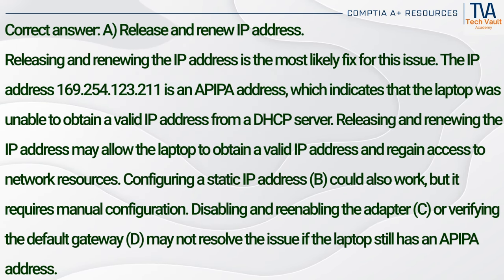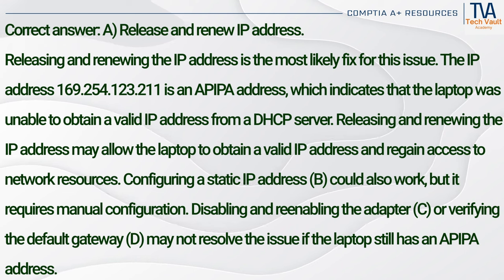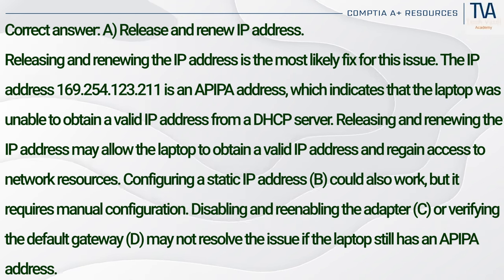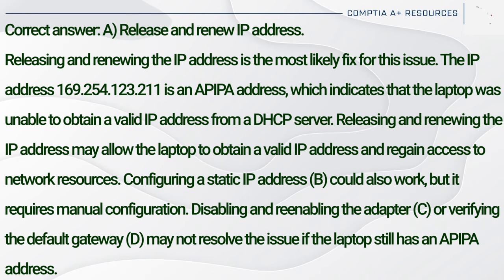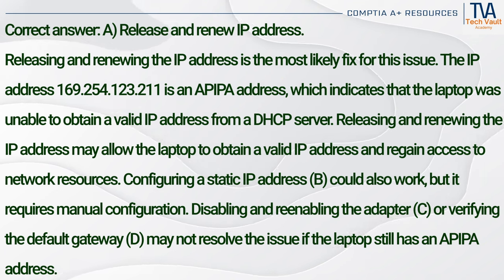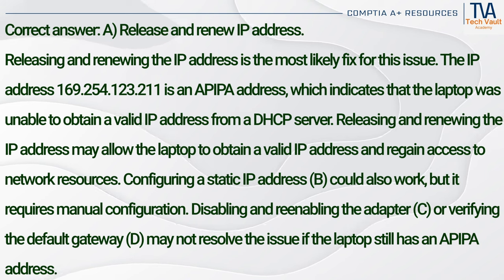Correct answer: A. Release and renew IP address. Releasing and renewing the IP address is the most likely fix. The IP address 169.254.123.211 is an APIPA address, which indicates that the laptop was unable to obtain a valid IP address from a DHCP server. Releasing and renewing the IP address may allow the laptop to obtain a valid IP address and regain access to network resources. Configuring a static IP (B) could also work but requires manual configuration. Disabling and re-enabling the adapter (C) or verifying the default gateway (D) may not resolve the issue if the laptop still has an APIPA address.